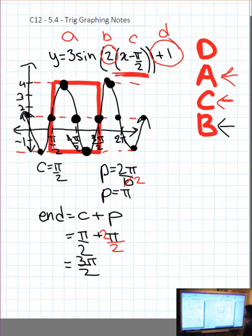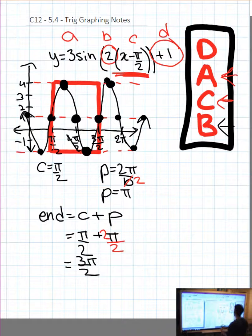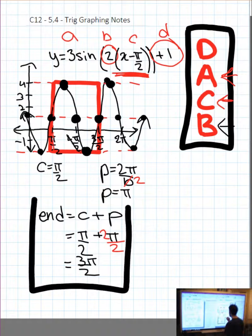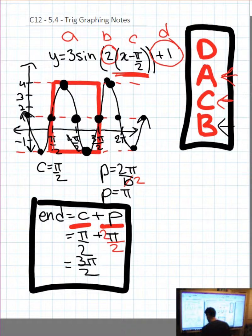Remember D, A, C, B: horizontal center line is the first step; up your amplitude and down your amplitude is the second step; shifting left or right by your C value is the third step; B is your last step using the formula P equals 2 pi over B, substituting your B value, finding your period, and then finding where you end by taking where you started at your C value, adding your period, and adding the fractions to get 3 pi over 2. Draw in your box and use the pattern.